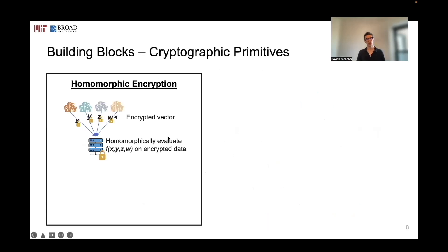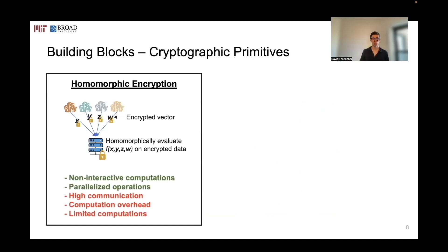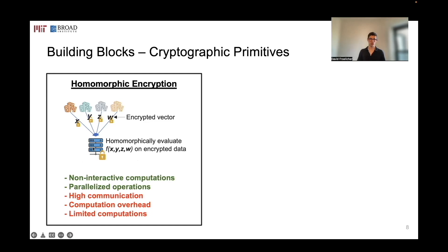The first building block is homomorphic encryption. Data providers encrypt their local data into encrypted vectors, where each ciphertext contains a vector of values. These encrypted vectors are sent to a computing party, which can perform a function by computing directly on the encrypted data — without ever decrypting it and without having to interact again with the data providers. This enables parallelized operations, as any operation on a ciphertext is done on all values inside it, but comes at the cost of high communication overhead and can be limited in the computations that can be performed.